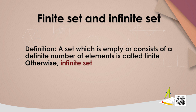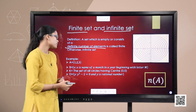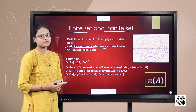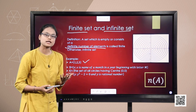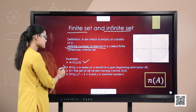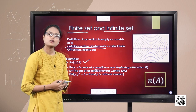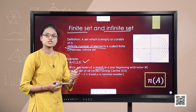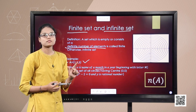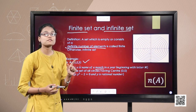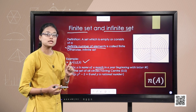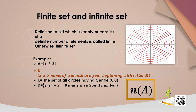Let us take examples. Set A has three elements — it is a finite set. Set B consists of all names of months in a year beginning with letter M — those are March and May, two months. It consists of a definite number of elements, so B is a finite set.